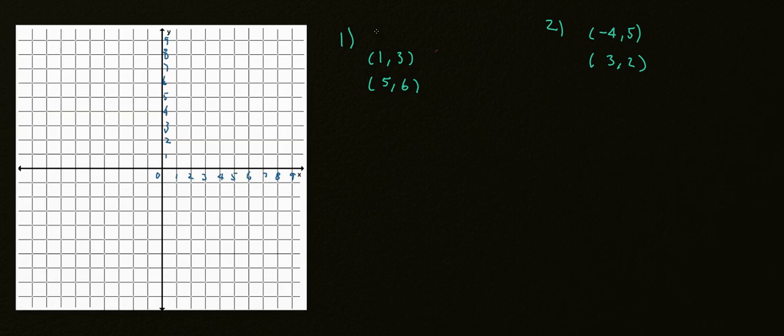Alright, so let's get started. We have these two points for number 1: (1,3) and (5,6). So what do they mean? Well, here, 1 and 5 are actually located on the x-axis. And then 3 and 6 are actually located on the y-axis. And the y is the vertical axis, which is right here. And the x-axis is on the horizontal axis of the Cartesian coordinate.